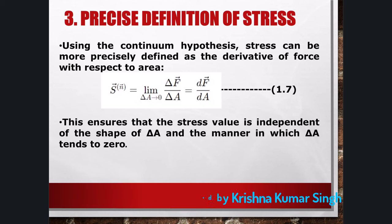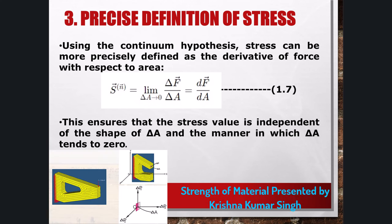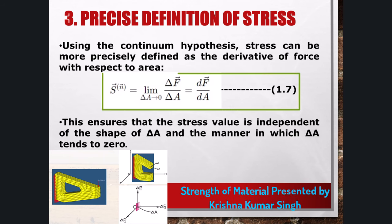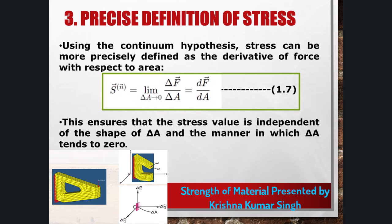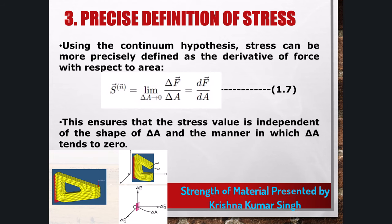However, this definition of stress is inadequate as it gives only an average value of the stress at the given point. The continuum hypothesis enables us to define the stress more precisely: S(n) is equal to the limit as delta-A tends to zero of delta-F over delta-A, which equals dF/dA. We assume here that the value of this limit exists and is unique, and that it is independent of the shape of delta-A and the manner in which delta-A tends to zero.